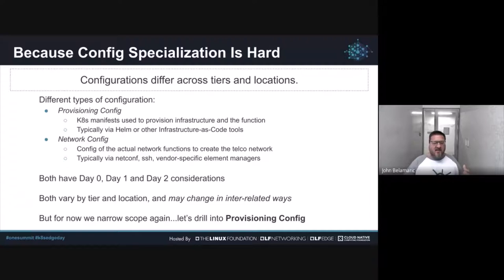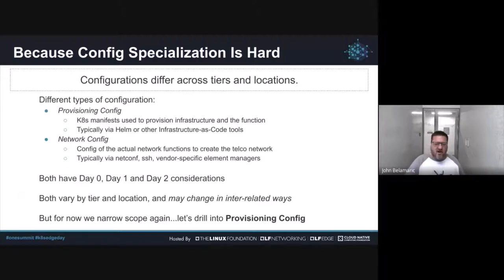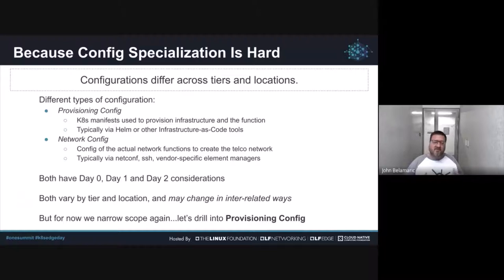Another dimension is the day zero, one, and two considerations. Day zero being design — how do I hook all these things together, what function talks to another function, what level of scale do they need. Day one being how do I actually provision these. Day two — how do I scale it, how do I make changes to it. Both these types of configs vary based upon everything we talked about: the tier, the location, the specific function, the particular use cases and requirements for that network we're trying to render. And they change in interrelated ways — you change one, you may have to change both.